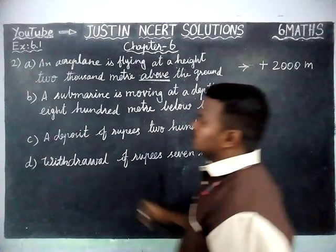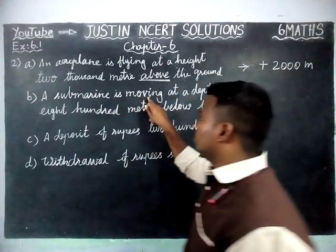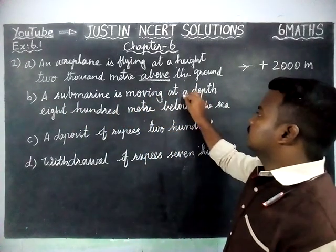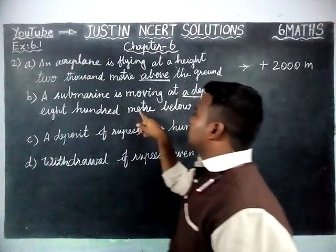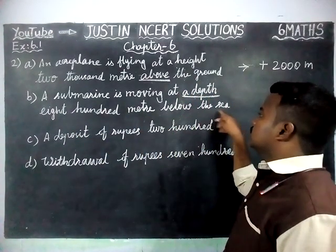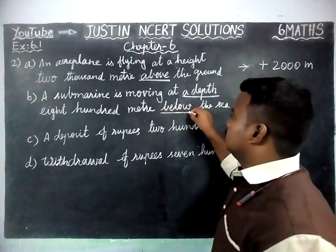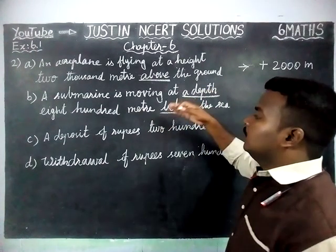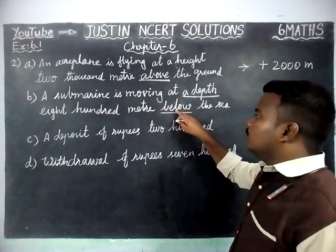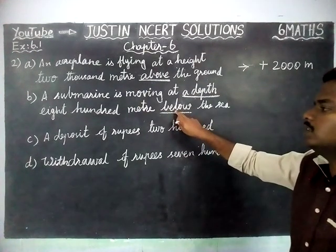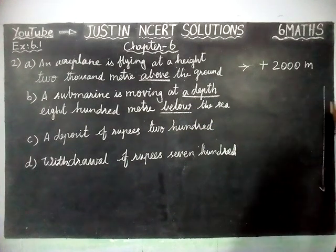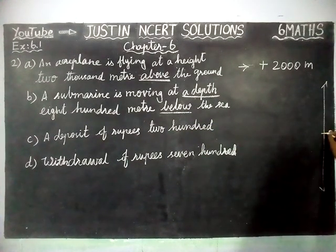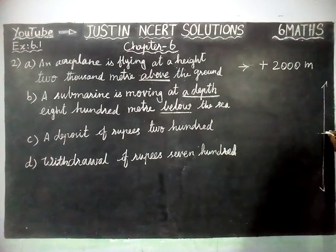Part B is: a submarine is moving at a depth of 800 meters below the sea. We have to underline the words 'depth' and 'below'. Below the sea means negative, because if you draw a number line, zero indicates the sea level. When we move above sea level, those are positive numbers.